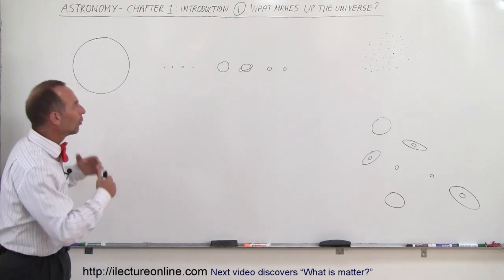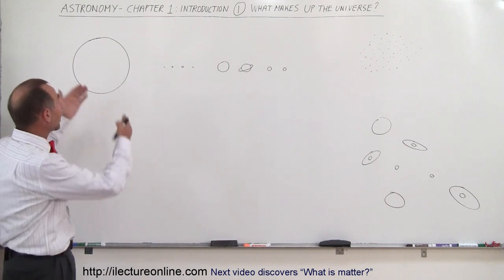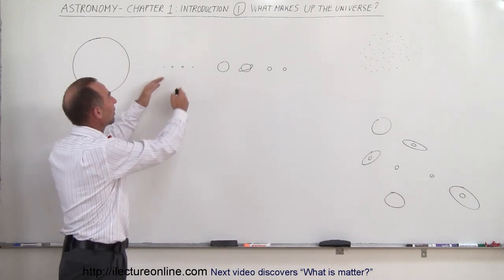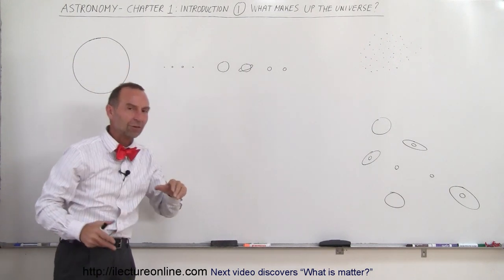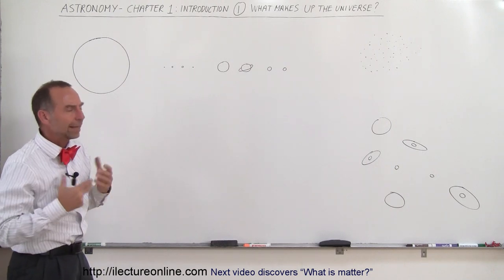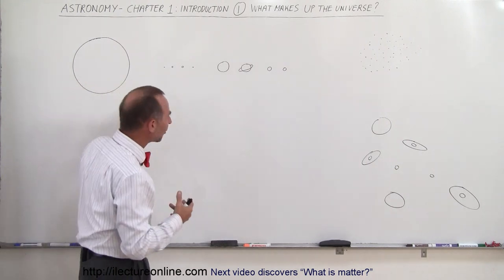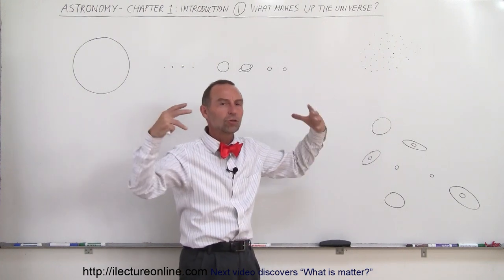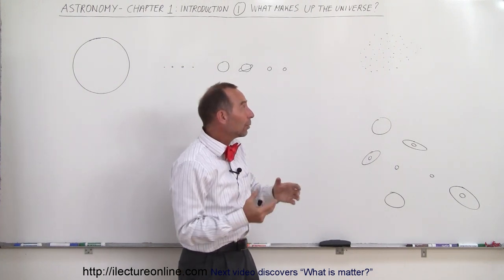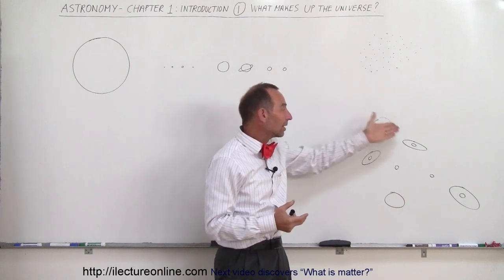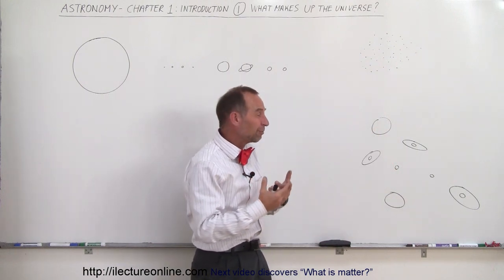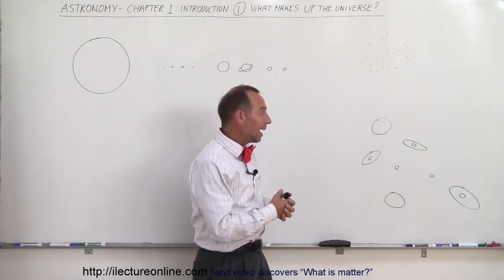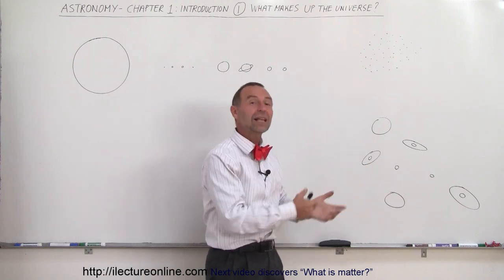They begin to think in terms of the Sun, the four terrestrial planets, the four gas planets, our solar system. Then they realize our Sun is just one of many stars. They think about large accumulations of stars, and realize stars make up galaxies. Every galaxy is made up of billions of stars, and there's billions of galaxies out there.